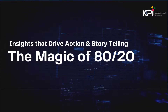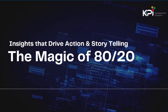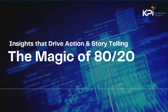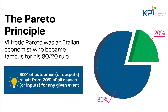In this module we're going to look at the magic of the 80/20 rule. Vilfredo Pareto was an Italian economist who became famous for his 80/20 rule, now commonly called the Pareto principle. It basically says that 80% of outcomes or outputs result from 20% of all the causes or inputs for any given event.